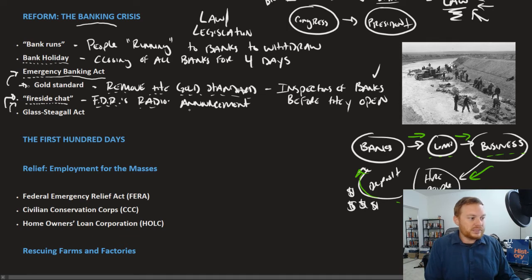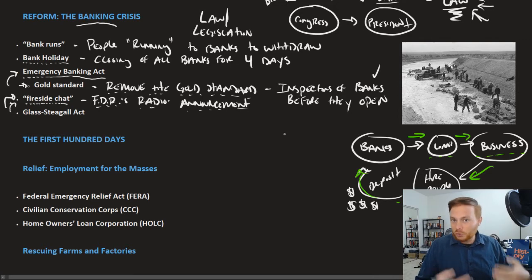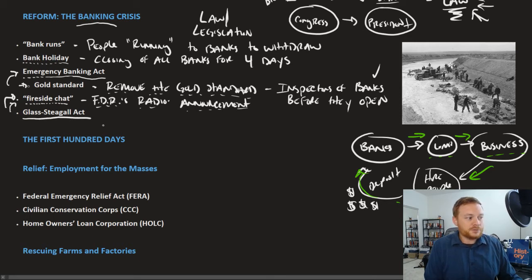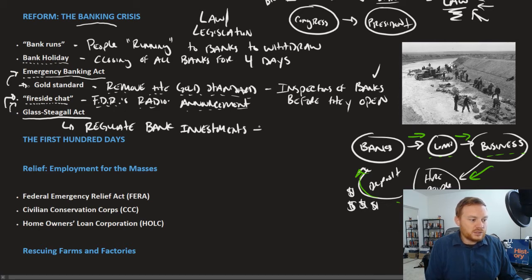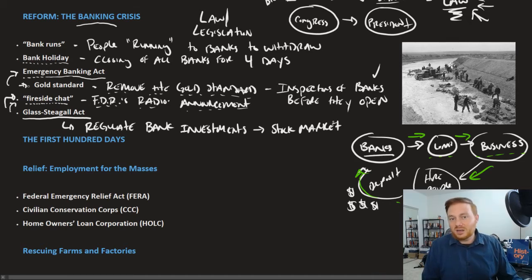Roosevelt pleaded with the public to trust the banking system again. The Bank Holiday, the Banking Act, and the Fireside Chats all helped get the banking system back on track — actually in a better place than before. Another financial part of the First New Deal was the Glass-Steagall Act, which regulated bank investments, specifically their investments in the stock market. One reason banks failed during the Depression was that they had invested their deposits in the stock market rather than holding onto them.